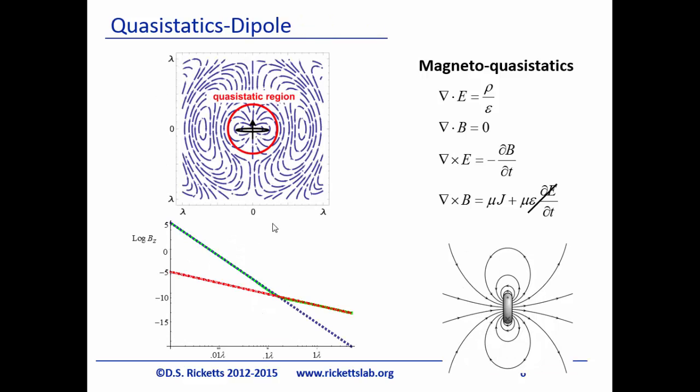If you look at the fields from a dipole antenna — in terms of lambda — the red is the radiating field propagating out from the antenna, and the green is the non-radiating field. When you're about a hundredth of a wavelength close to a dipole, all you're seeing is this quasi-static field. Everything we're going to talk about means we're very close to the originating antenna — typically our wavelength is around a kilometer and we're within a hundred meters of it.